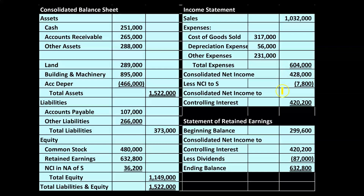Then we account for the non-controlling interest in S — the subsidiary — which acts like an expense, decreasing the consolidated net income. The bottom line then is consolidated net income attributable to the controlling interest. So you have two key line items: the consolidated net income showing overall performance, and then a deduction for the non-controlling interest's share.